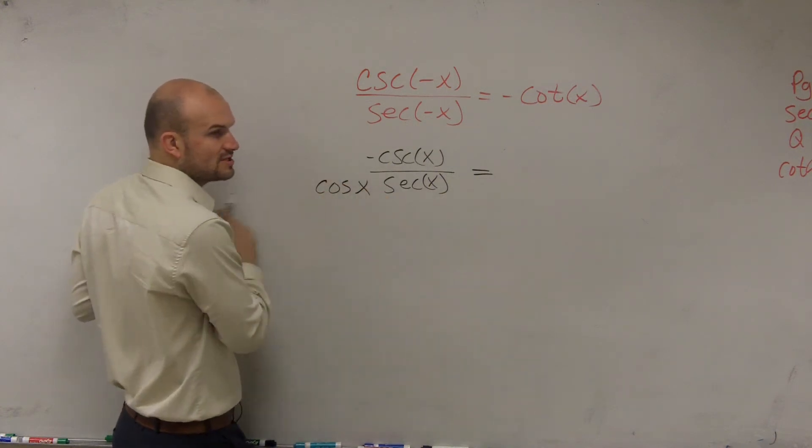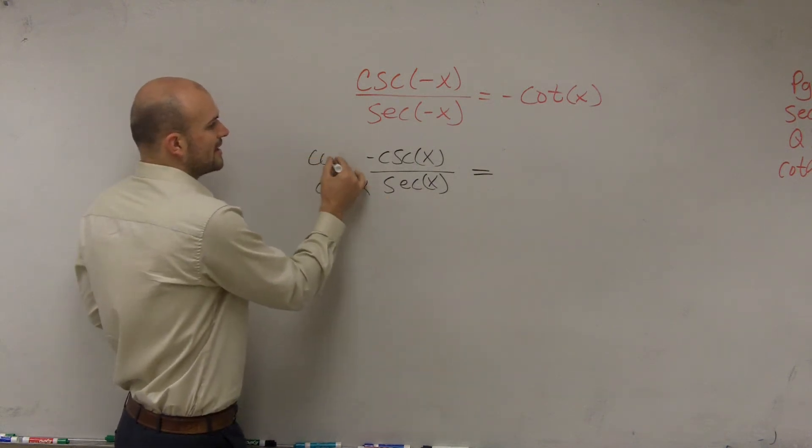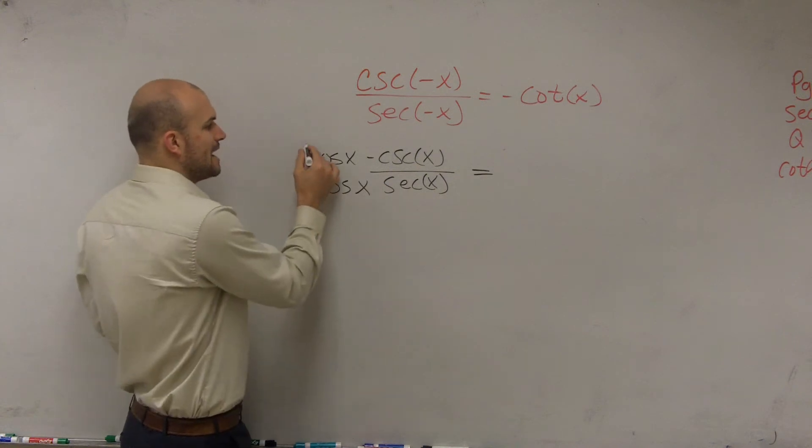Would multiplying secant times cosine get rid of my term on the bottom? Yes. But I got to make sure whatever I multiply on the bottom, I have to multiply on top.